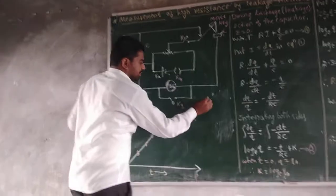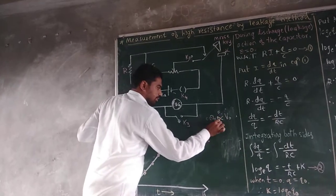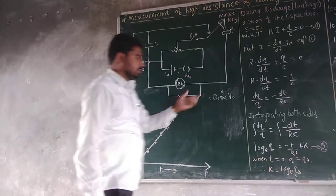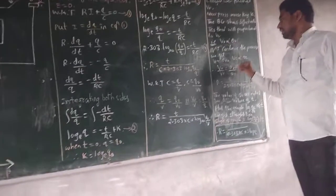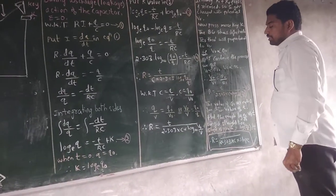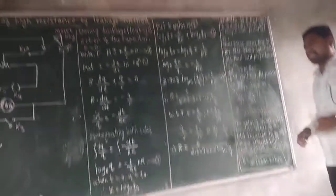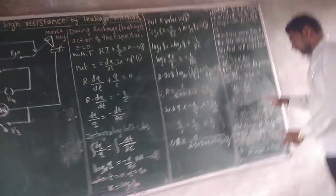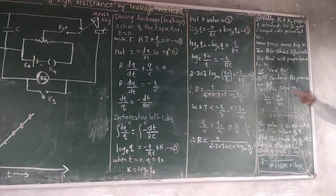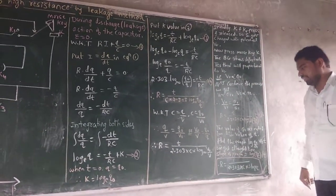The first deflection is taken as theta-naught, and the corresponding potential difference is V₀. Both are directly proportional to each other. Similarly, V1 is directly proportional to theta-1, and V2 is directly proportional to theta-2, and so on. Comparing these, V₀ by V1 equals theta-naught by theta-1.